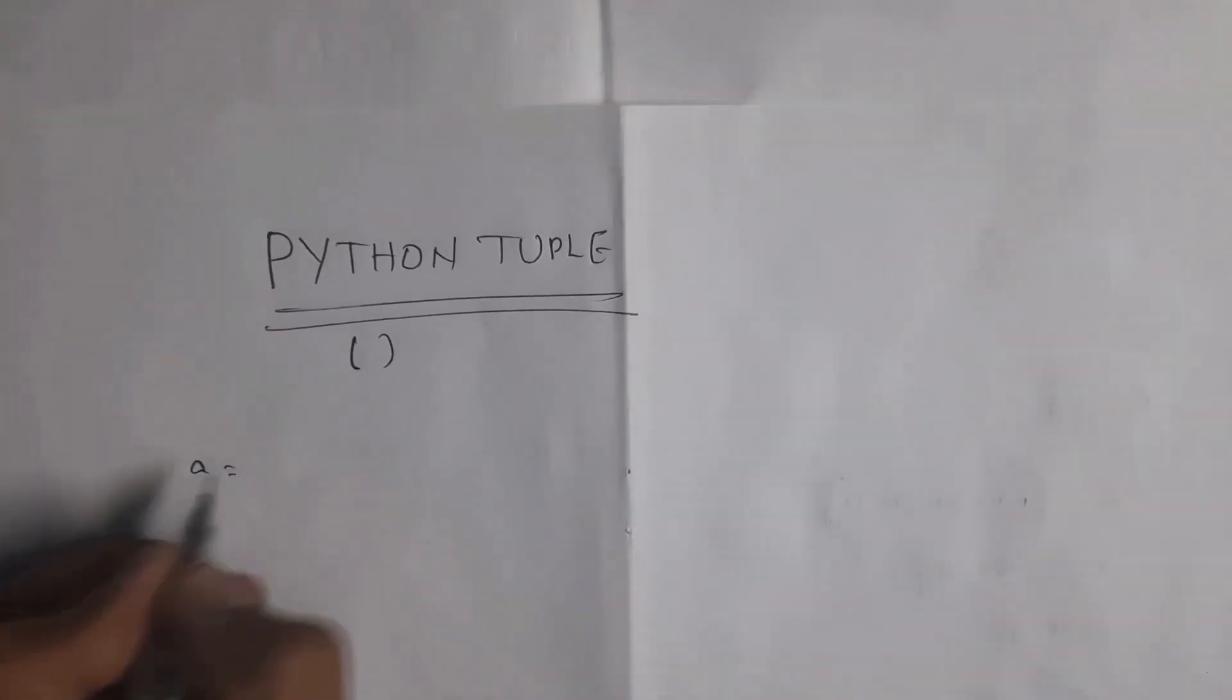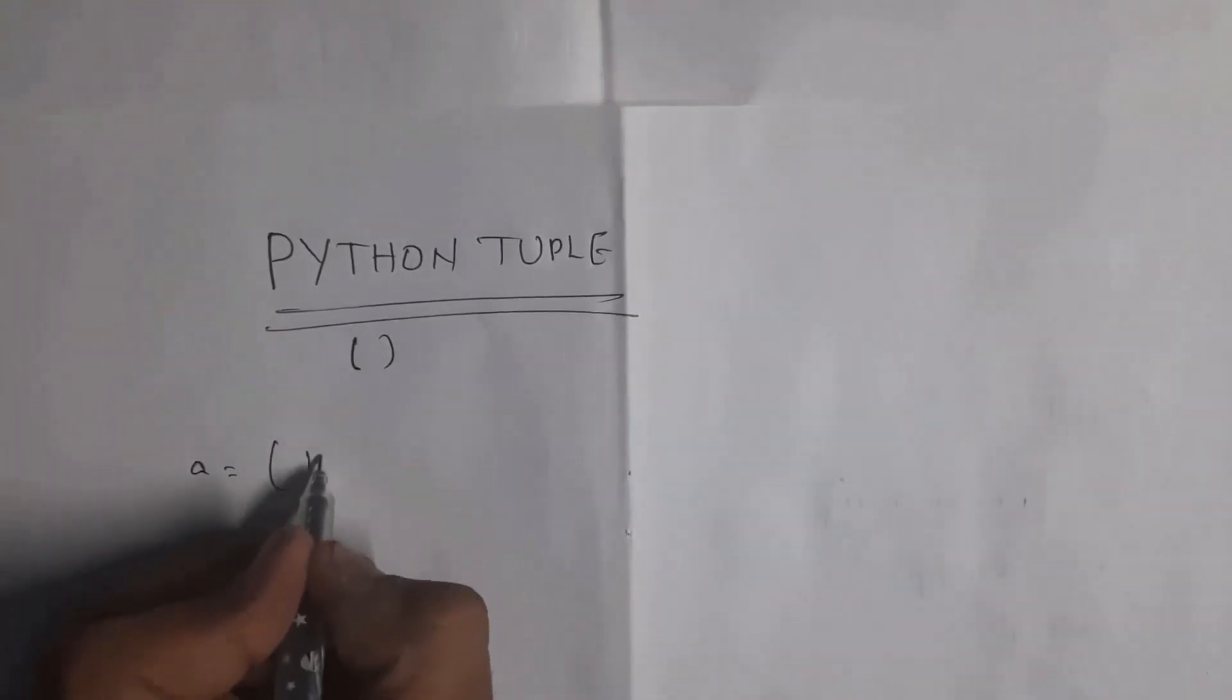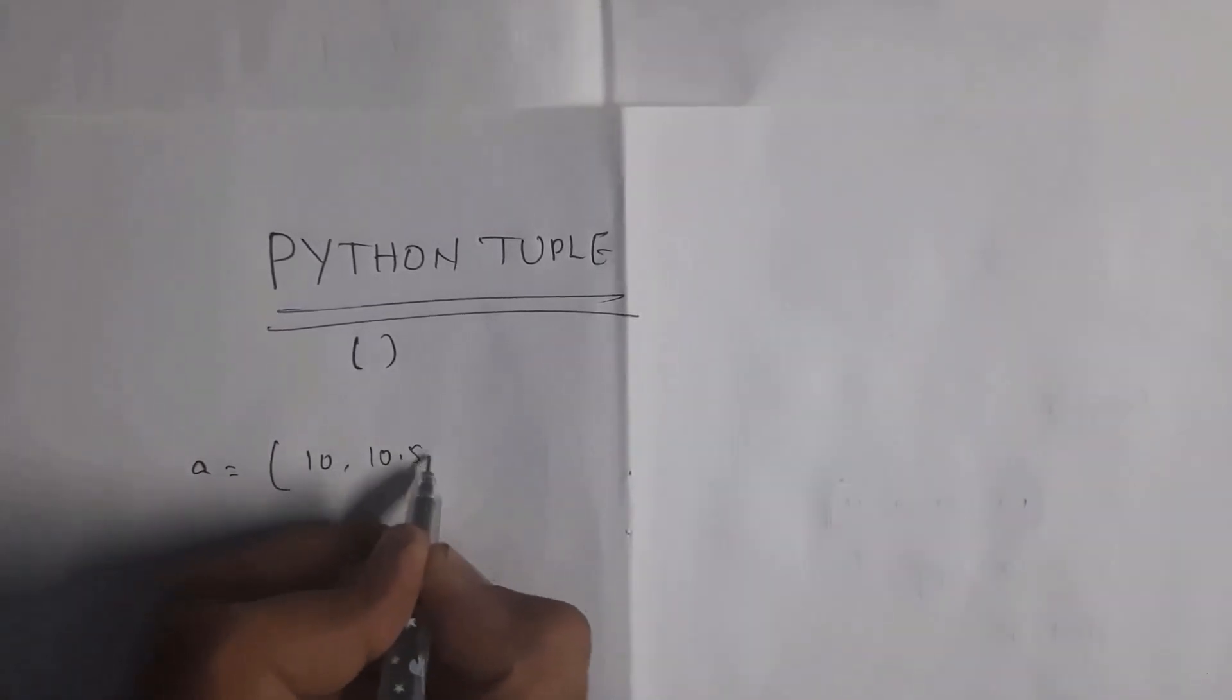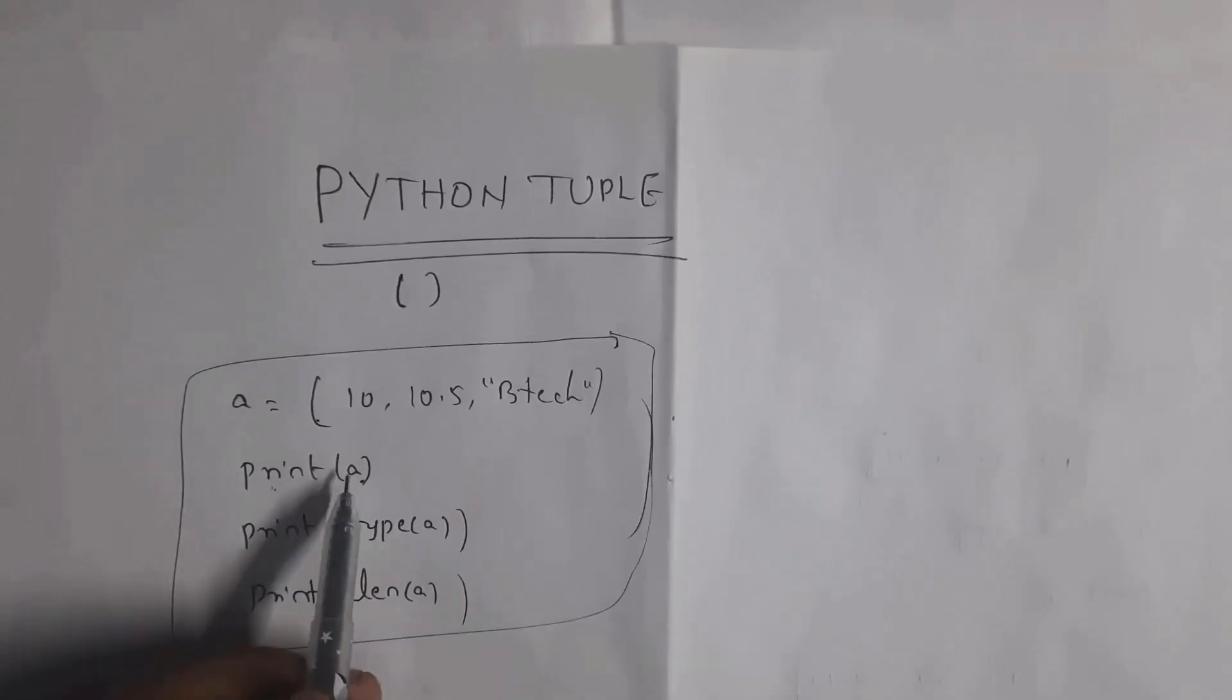For example, a equals in normal brackets I am writing 10 comma 10.5 comma 'btec'. At first I written print(a), so whatever data that this variable a contains it will be generated as output.